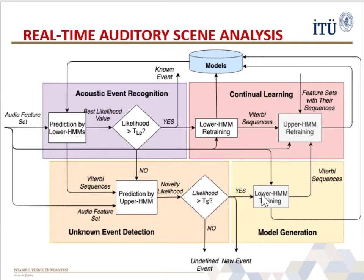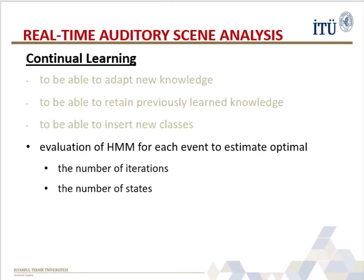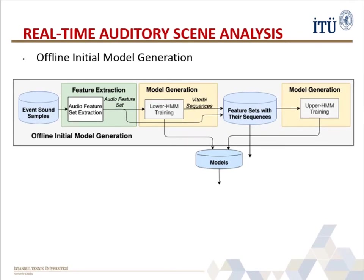After the detection of an unknown event, a model is generated using this feature set. It is also aimed to develop the continual learning ability to adapt new knowledge, retain previously learned knowledge, and insert new events. Therefore, to achieve these abilities, it is required to retrain the models for continual learning. Like feature selection, to reduce the computational time for retraining, we evaluated hidden Markov models for each event to estimate the optimal number of iterations for training and number of states. In the offline initial model generation process, being a separate pipeline, at least one initial model is generated using one, a few, or several audio patterns before real-time scene analysis. In this process, the previous feature sets and their Viterbi sequences are retained to be used in retraining.